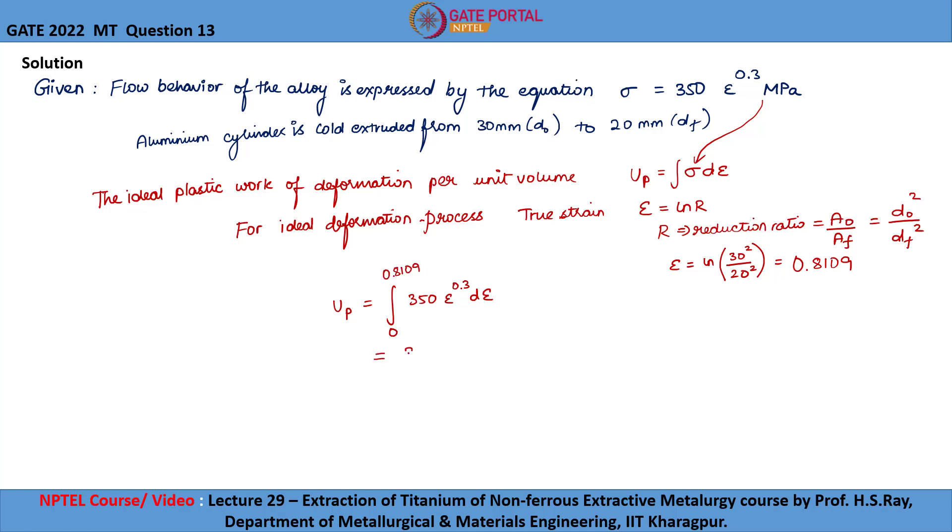On integrating, we will be getting 350 multiplied by epsilon power 1.3 by 1.3, and the lower limit is 0, upper limit is 0.8109.